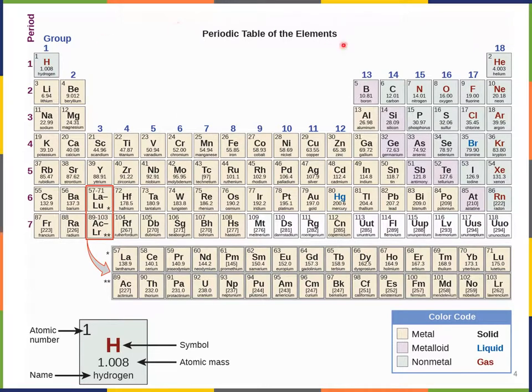There are 18 groups, numbered 1 through 18, and periods 1 through 7, plus this little bit over here, which are actually not additional periods. This row over here, from 57 to 71, actually fits right here, 57 to 71. And this one over here, 89 to 103, fits right here, 89 to 103. They're just sort of taken out, because otherwise the periodic table would be really, really wide.